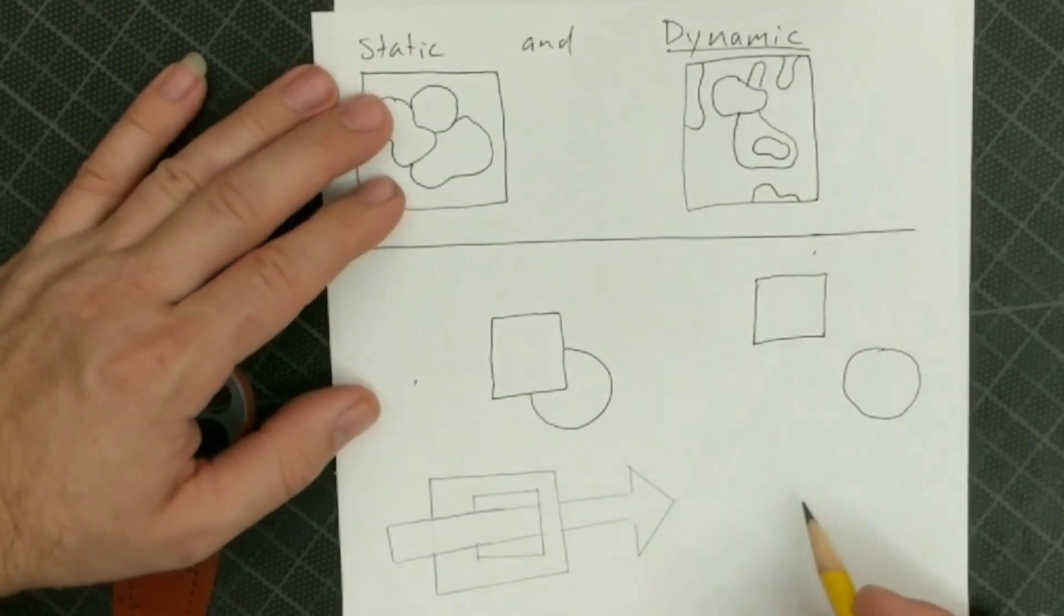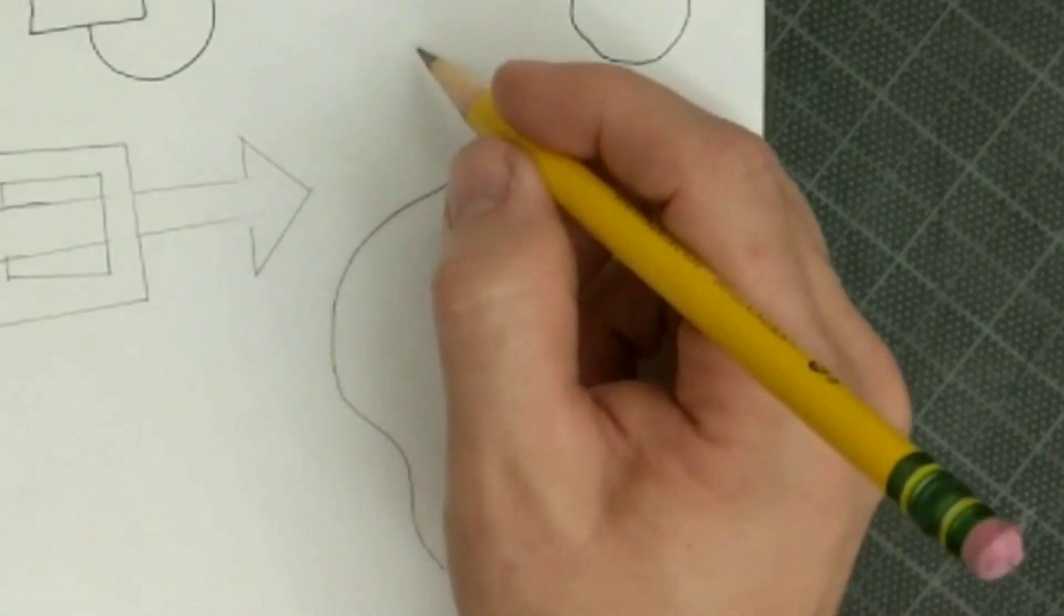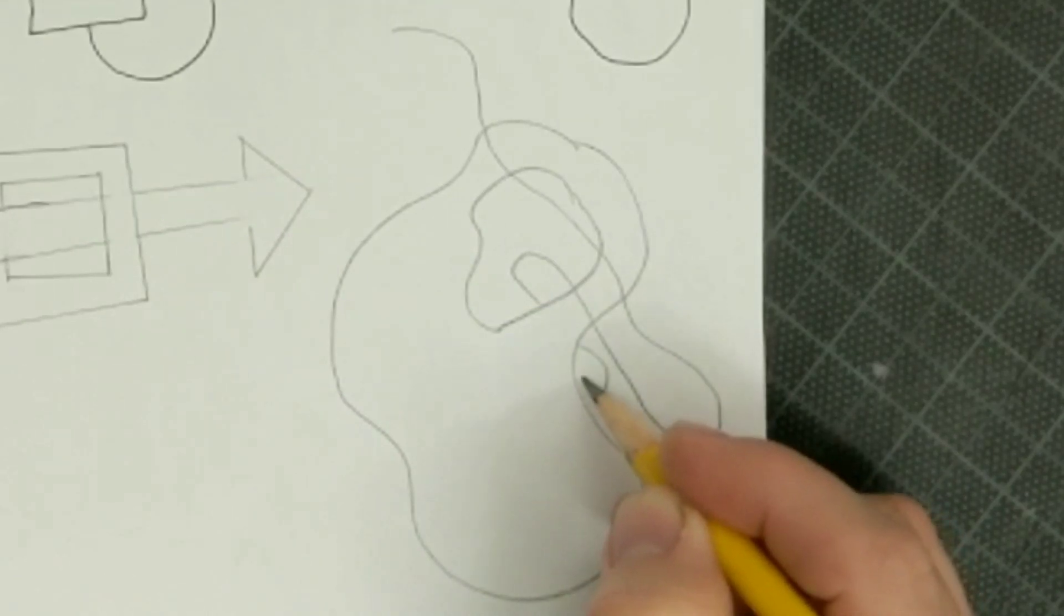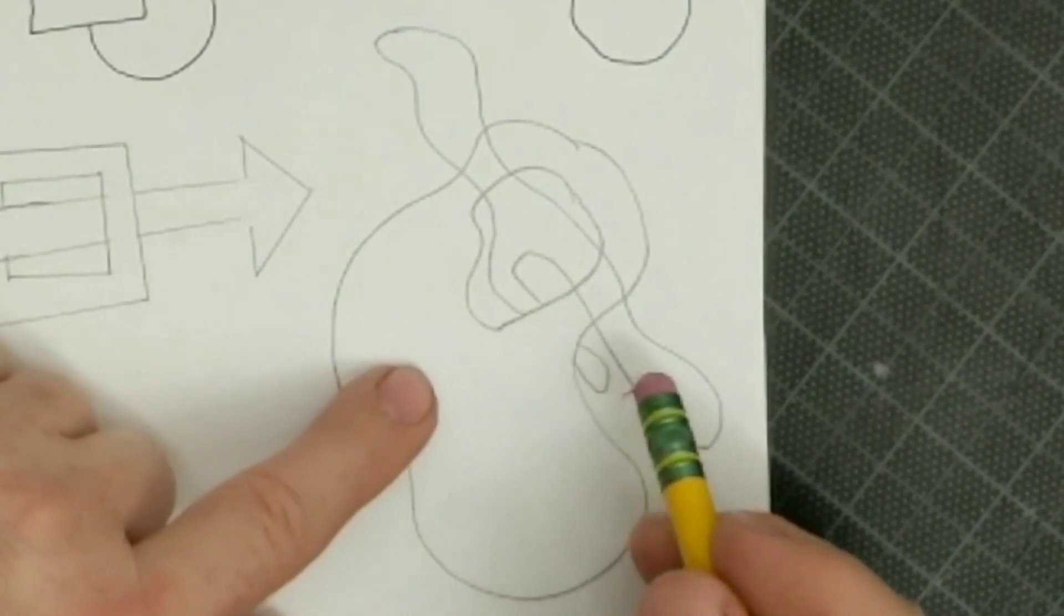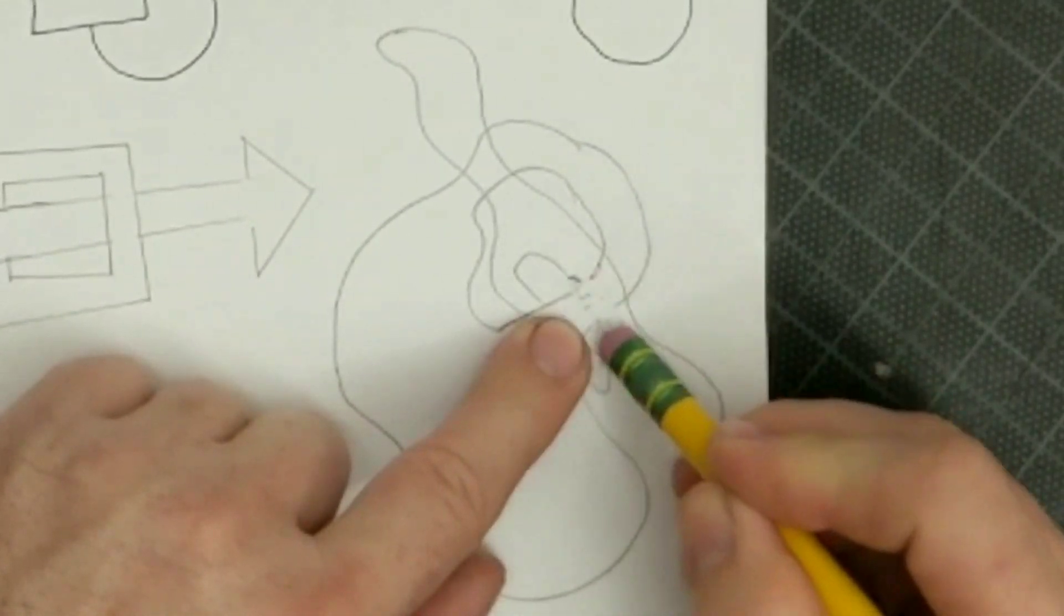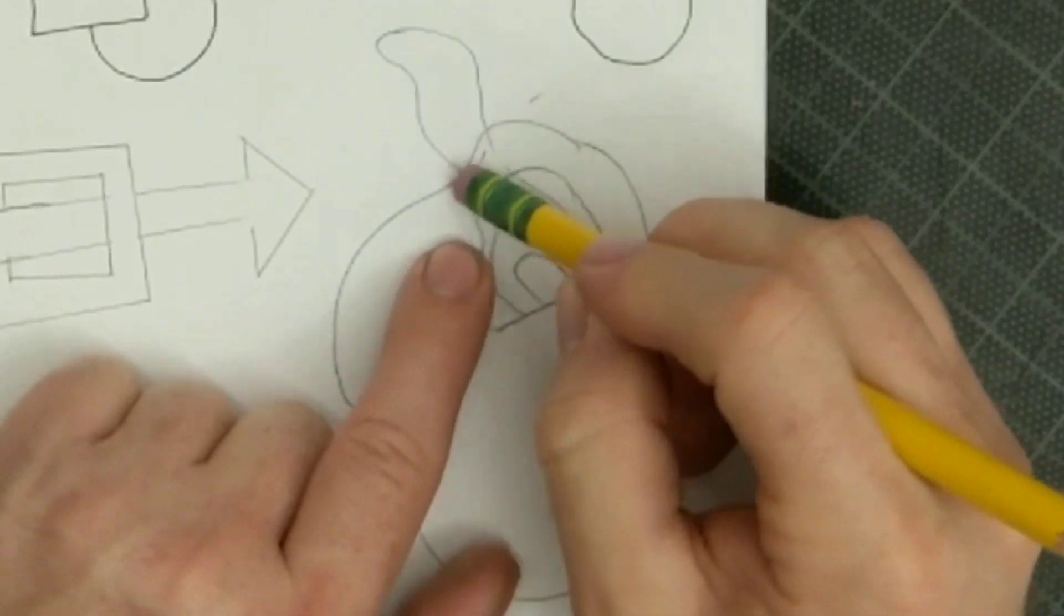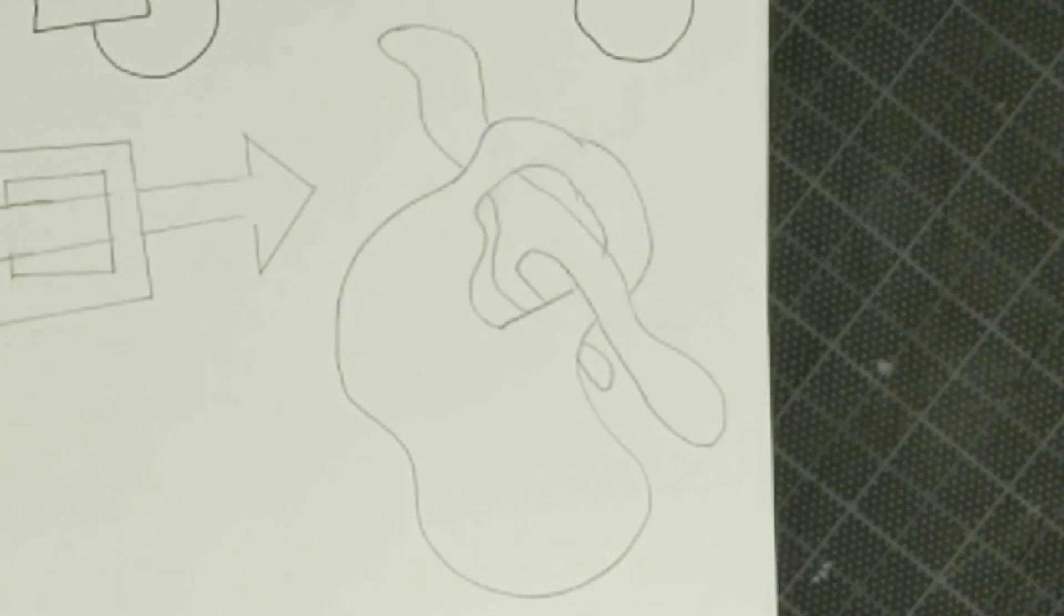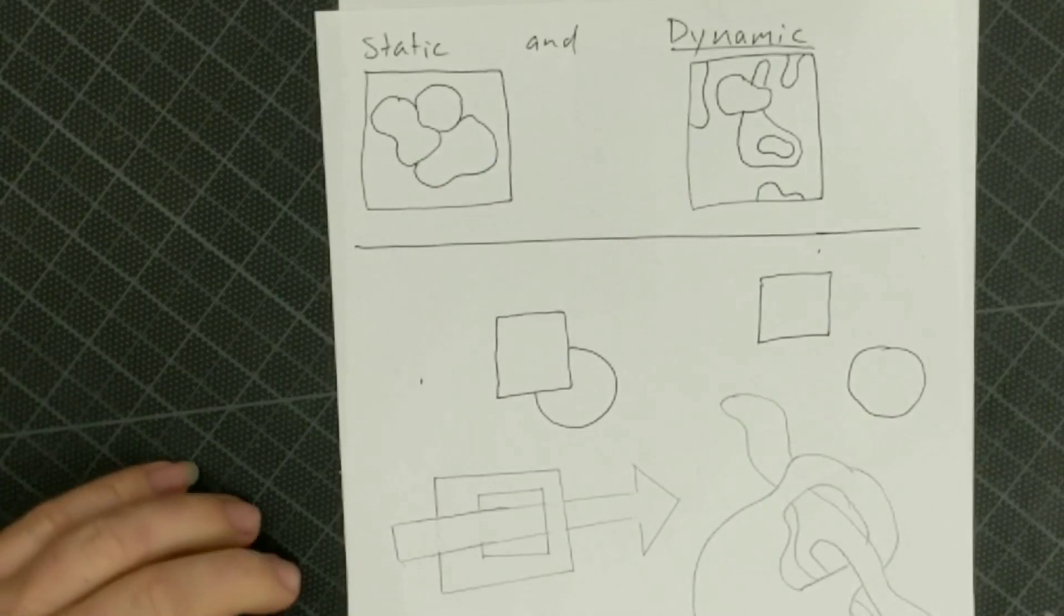This can be done, of course, with organic shapes as well. You have a big blob. A big blob has a hole, a window cut in it. And you want to create something that goes through, maybe even comes down. You just have to erase part of the original shape. Part of the new shape that's going through it.